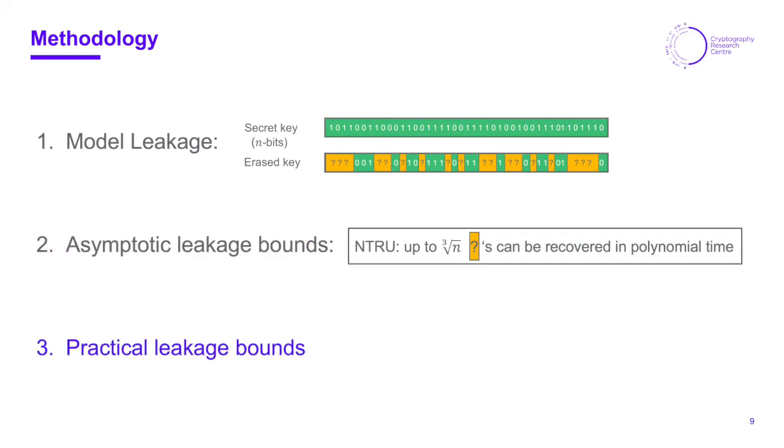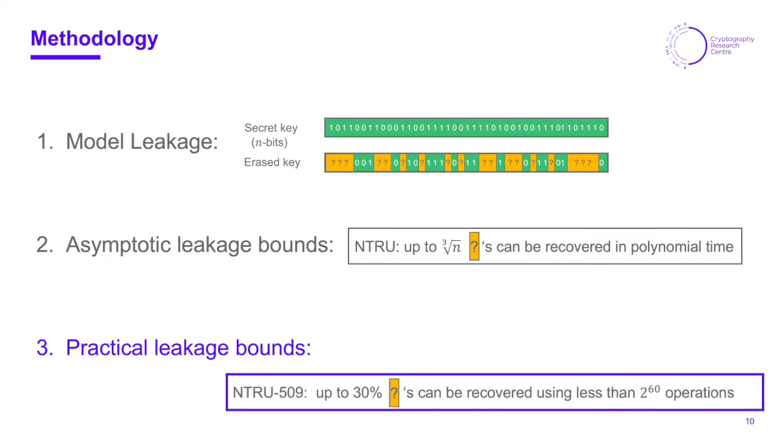Then we asked a more practical question where we ask how many erased bits can we tolerate if we want to recover the secret key in time less than some threshold. This threshold might for example be 2 to the 60 bit operations. We find in the NTRU case and also in other cases that we can tolerate way higher erasures. For example in the NTRU case we find that 30 percent of erasures can still be recovered using less than 2 to the 60 operations.